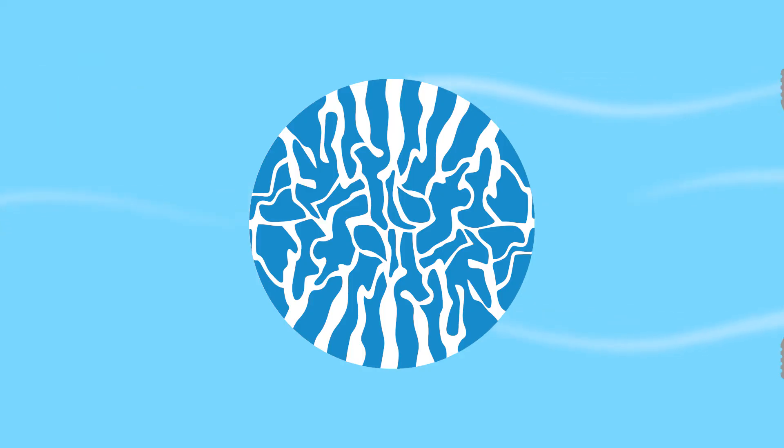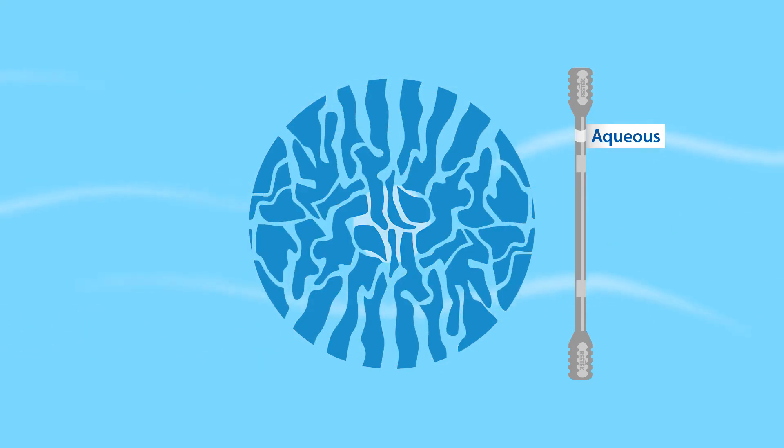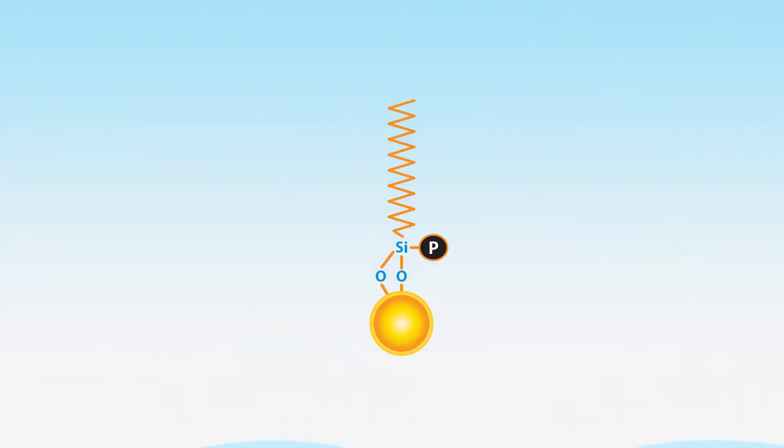So in this case, an aqueous C18 column, which has about 15% carbon load, is recommended. These phases are compatible with 100% aqueous mobile phases, and also provide more retention for polar molecules that need a little bit of an extra boost. This extra retention comes from a polar modification of the phase that also makes it 100% water compatible.